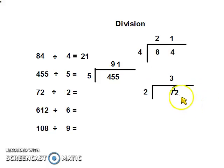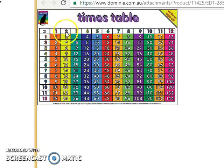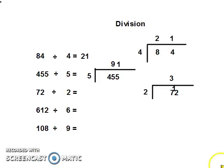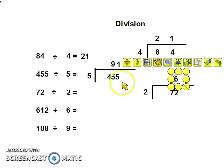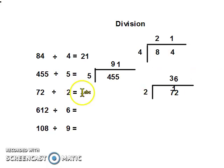So now we have 12 divided by 2. So we'll go back to our chart, go down our 2's column, find 12, and it goes into it 6 times. So we write a 6 in our units column. So the answer for 72 divided by 2 equals 36.